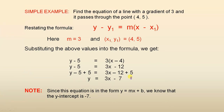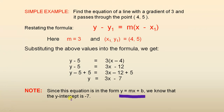Here's an interesting little note. Since the equation is in the form y equals m x plus b — which we saw in previous videos where m was the gradient and b was the y intercept — we know that the y intercept is minus seven.